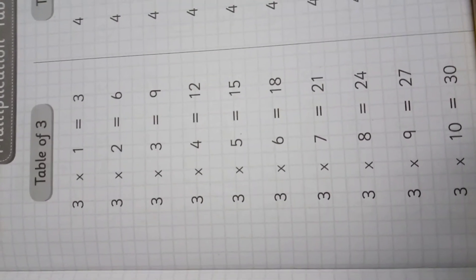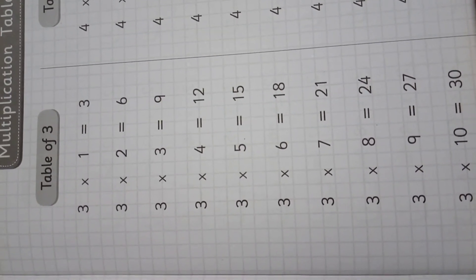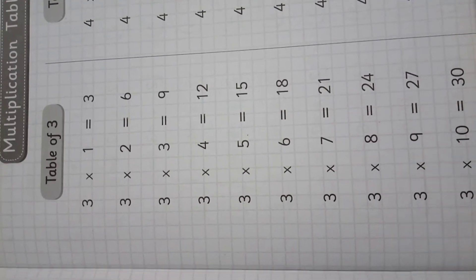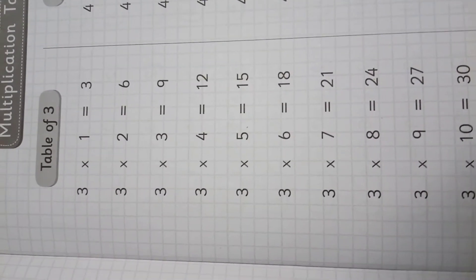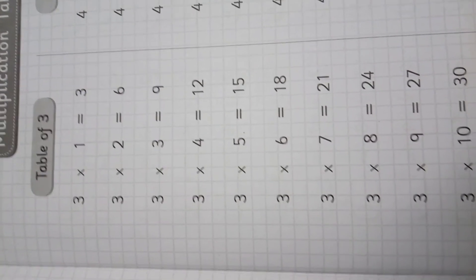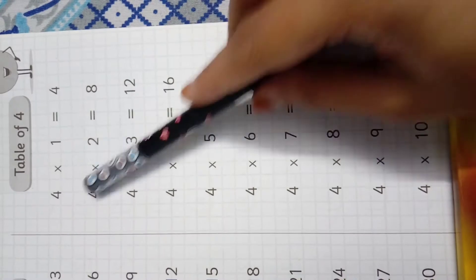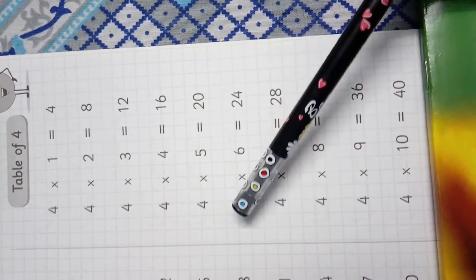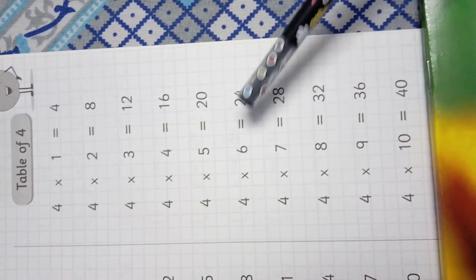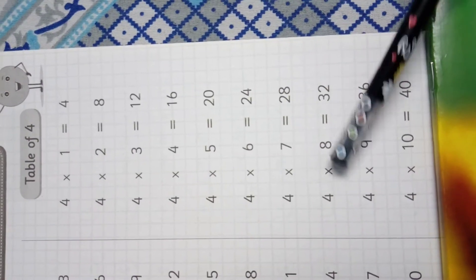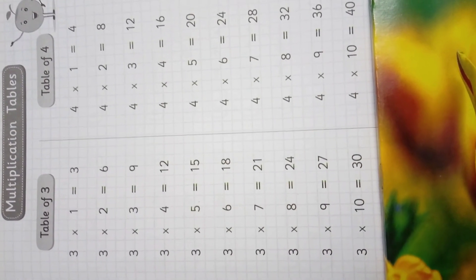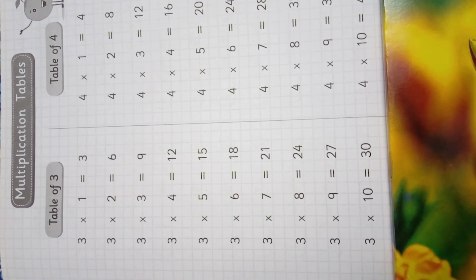You have to learn the tables. If you learn the tables, then only you can do the multiplication — understand? That's why you have to learn the tables. Now see the table of four: four one's a four, four two's a eight, four three's a twelve, four four's a sixteen, four five's a twenty, four six's a twenty four, four seven's a twenty eight, four eight's a thirty two, four nine's a thirty six, four ten's a forty. Like this we will see the tables up to fifteen.